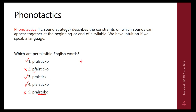You might have a phonotactic rule saying you can't have 'p' followed by another consonant at the beginning of a syllable — so no 'pc' clusters. This would disallow 'pf' and 'pt', but it would also block 'pl', so we need a more refined constraint that allows 'pl' and 'pr' while still blocking others.